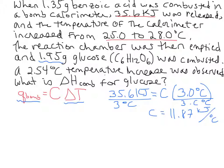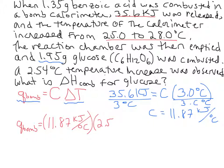Now let's write Q_bomb — the heat absorbed by the bomb calorimeter. That's 11.87 kilojoules per degree C multiplied by 2.54 degrees C. We combusted 1.95 grams of glucose and observed a 2.54 degrees C temperature increase. Plugging that in, we end up with 30.1 kilojoules of heat absorbed by the bomb calorimeter.